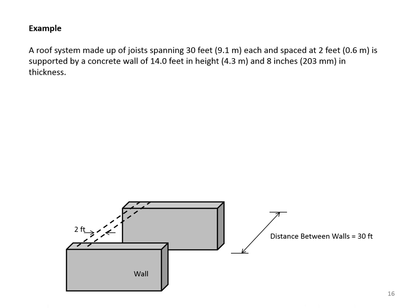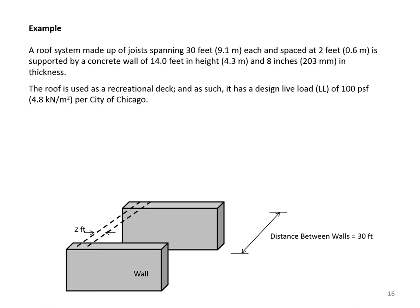Let's look at an example. We have a roof system made up of joists spanning 30 feet, each spaced at 2 feet, supported by concrete walls of 14 feet in height and 8 inches in thickness. The walls provide spans for the beams which are 2 feet apart, with a distance between walls of 30 feet.